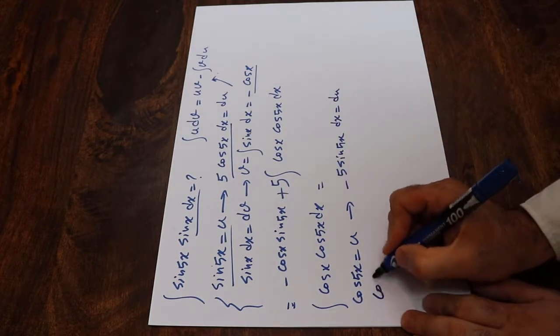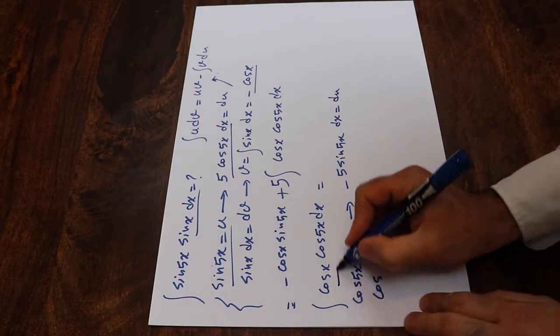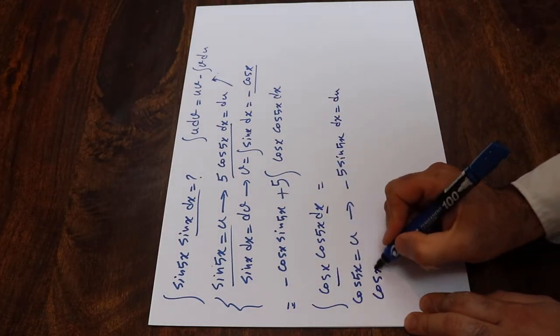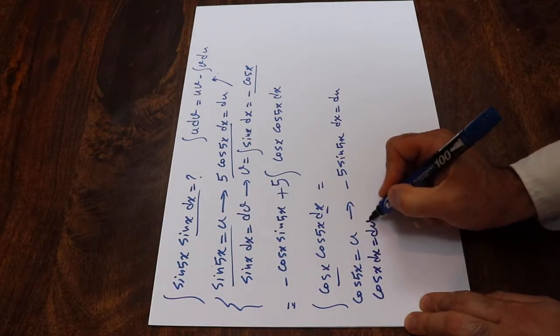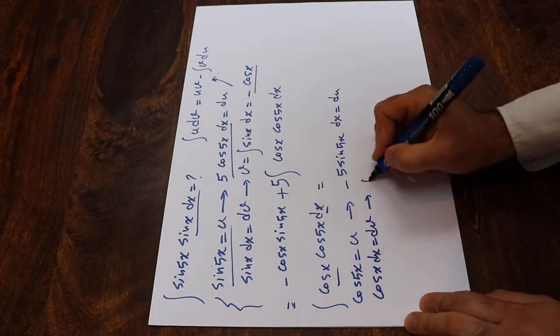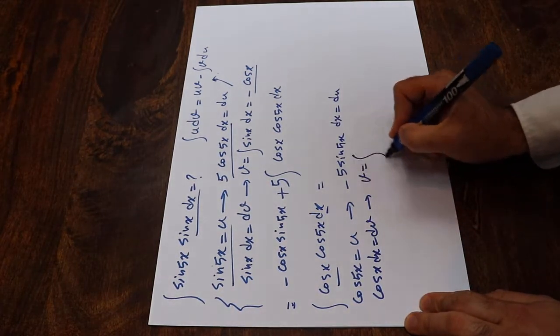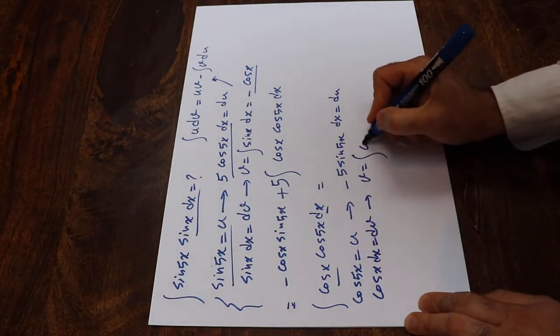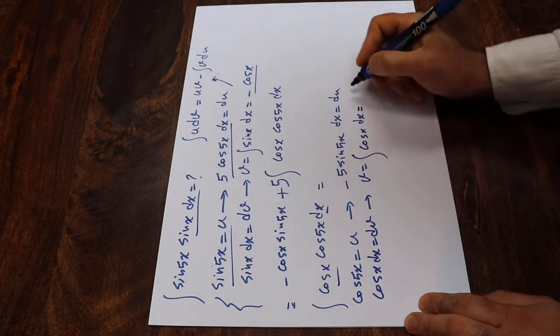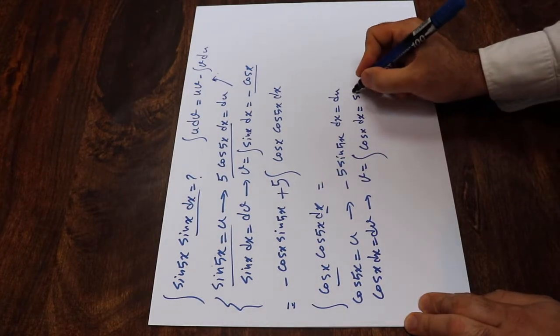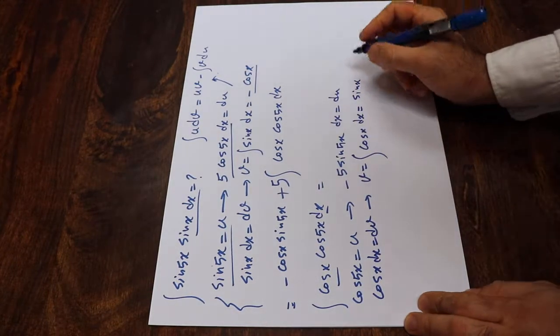And now let's define cosine x dx as dv. Therefore, v will be equal to the integral of cosine x dx, which is equal to sin x.